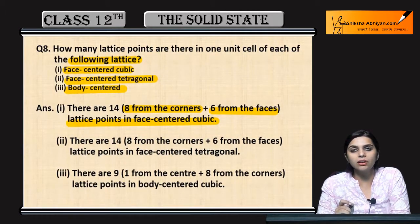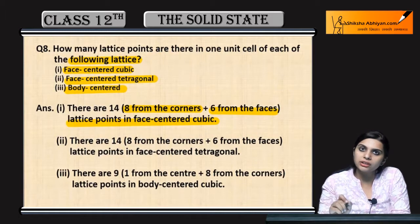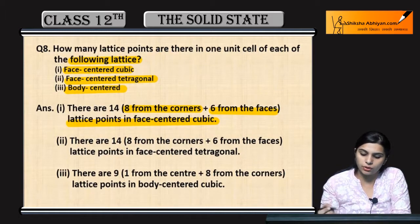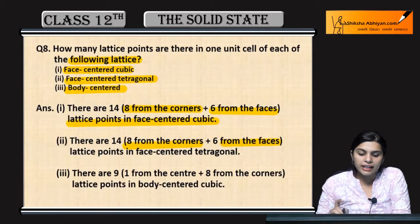Next is face centered tetragonal. Same as face centered cubic — 8 from corners and 6 from faces, so 14 lattice points in the unit cell as well.